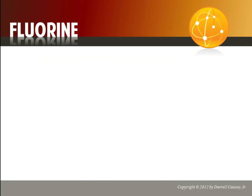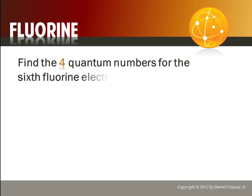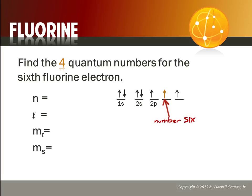Fluorine. Same thing. And this time we're going to do the sixth electron of fluorine. So, you've got to pay attention. Fluorine has nine electrons. And we've got to remember Hund's rule. So, put down our four quantum numbers. Build our orbital notation. Put in our electrons.